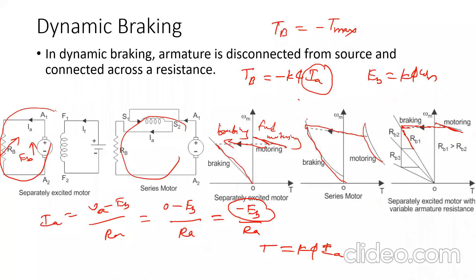Because of the braking, the characteristic shifts from motoring to braking region. Due to the high resistance in the braking circuit the speed falls sharply, with resistance equal to Rb1. To maintain the same maximum torque, some resistance is cut off so current rises again and braking torque rises — the speed drops sharply with resistance Rb2. Again, some part of resistance is cut off, current rises, braking torque rises, and the speed falls sharply once more.